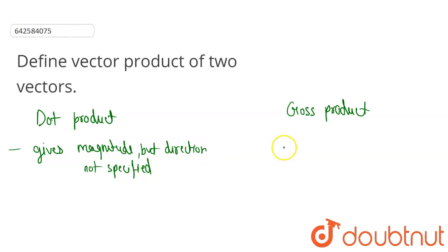And in cross product, it gives magnitude. So cross product of two vectors gives magnitude along with the direction.